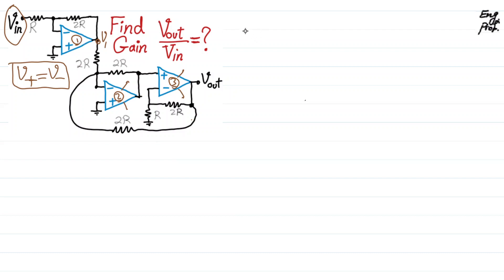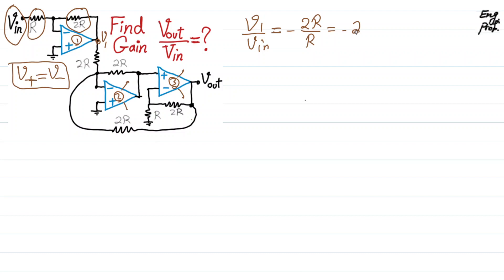For an inverting amplifier, the gain is well known. It is V1 over Vin equal to minus the feedback resistor 2R divided by the input resistor R. So the gain from Vin to V1 is negative two.